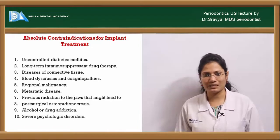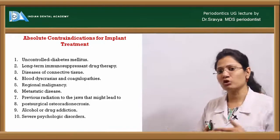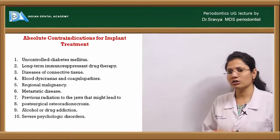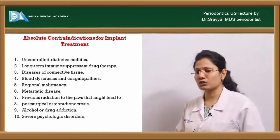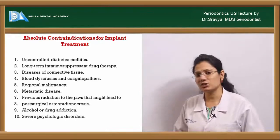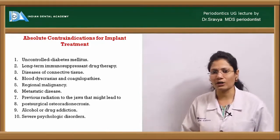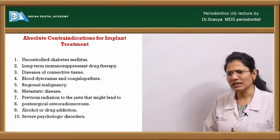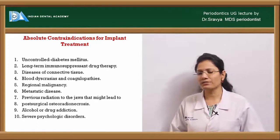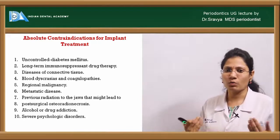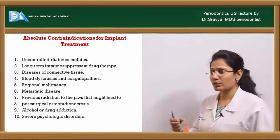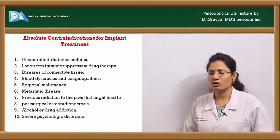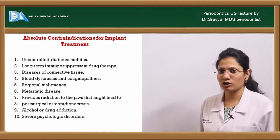Absolute contraindications for placing an implant include uncontrolled diabetes mellitus, long-term immunosuppressant drug therapy, diseases of the connective tissue, blood dyscrasia and coagulopathies, regional malignancies, any metastatic diseases, previous radiation or radiotherapy of the jaws which may lead to post-surgical osteoradionecrosis, alcohol or drug addiction, and severe psychological disorders.